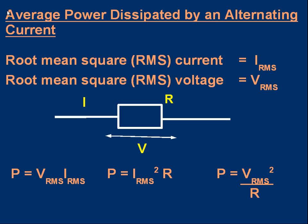OK, that means we've got a handy way to work out average power. If we know the RMS current and the RMS voltage, then for a resistor R with alternating current and voltage, the average power P is our standard formula V × I...